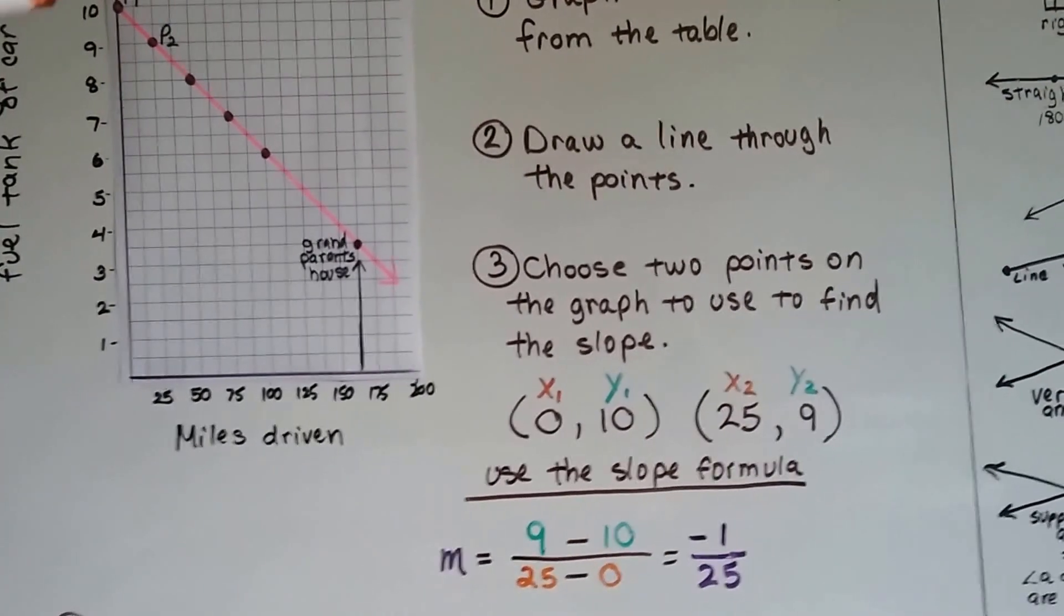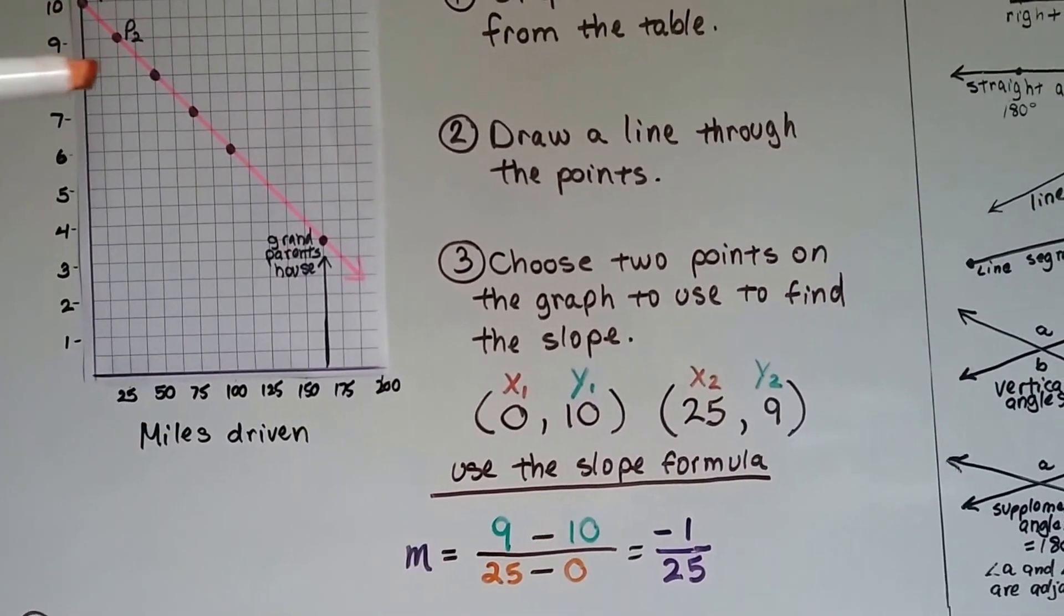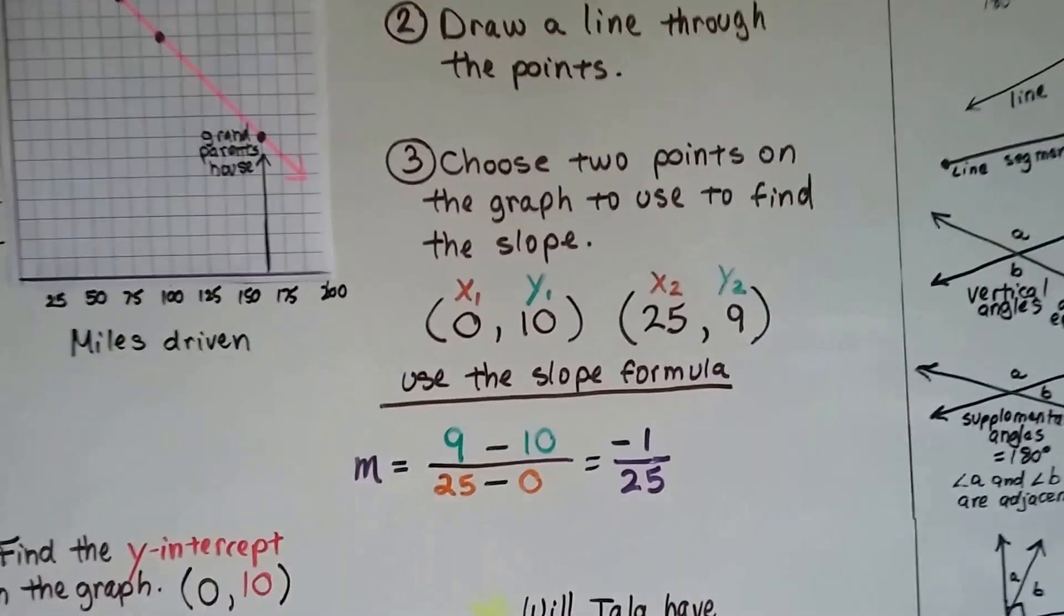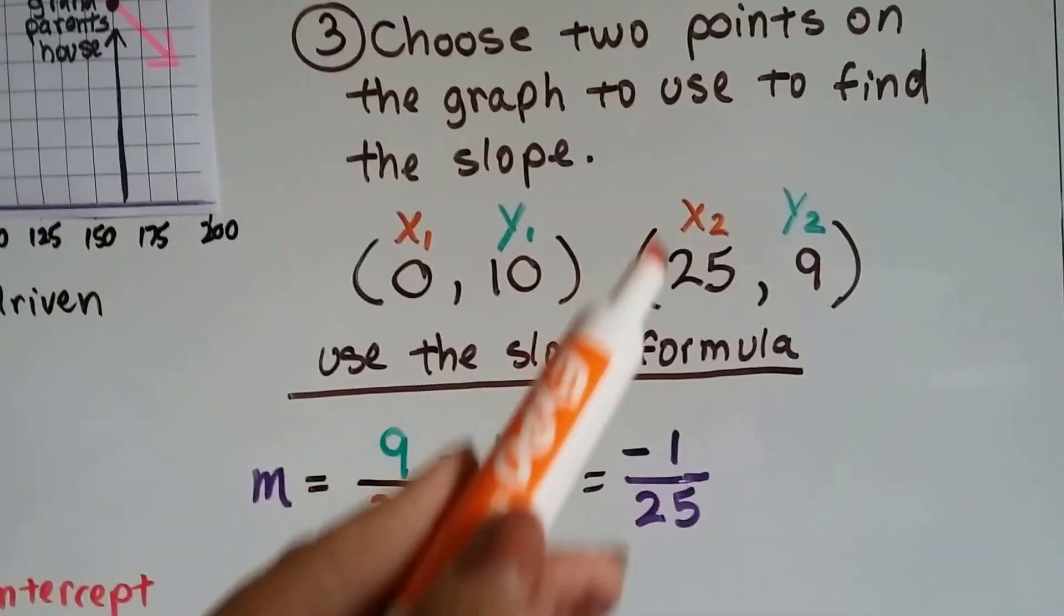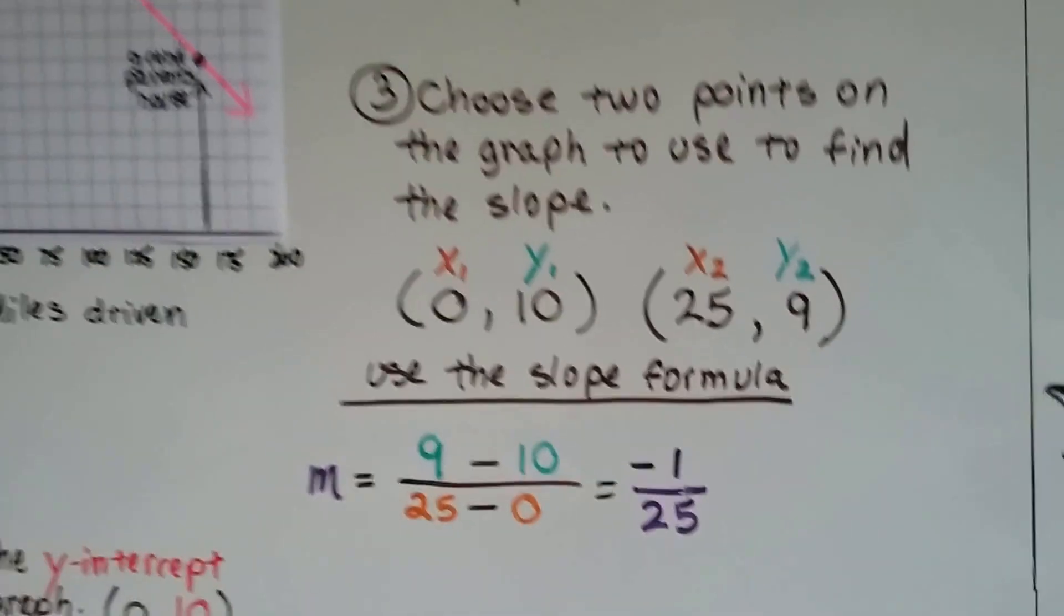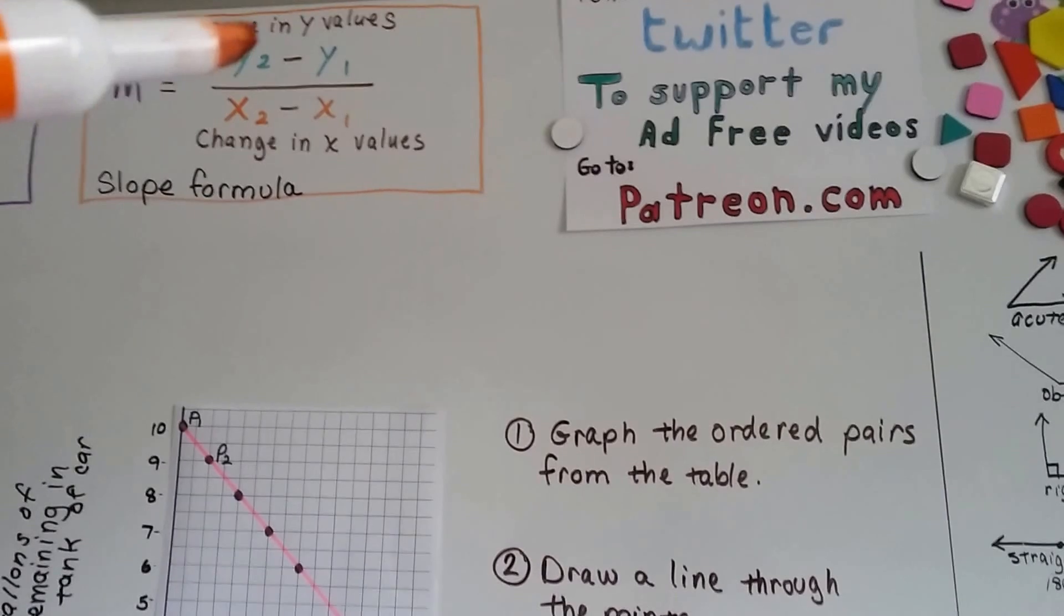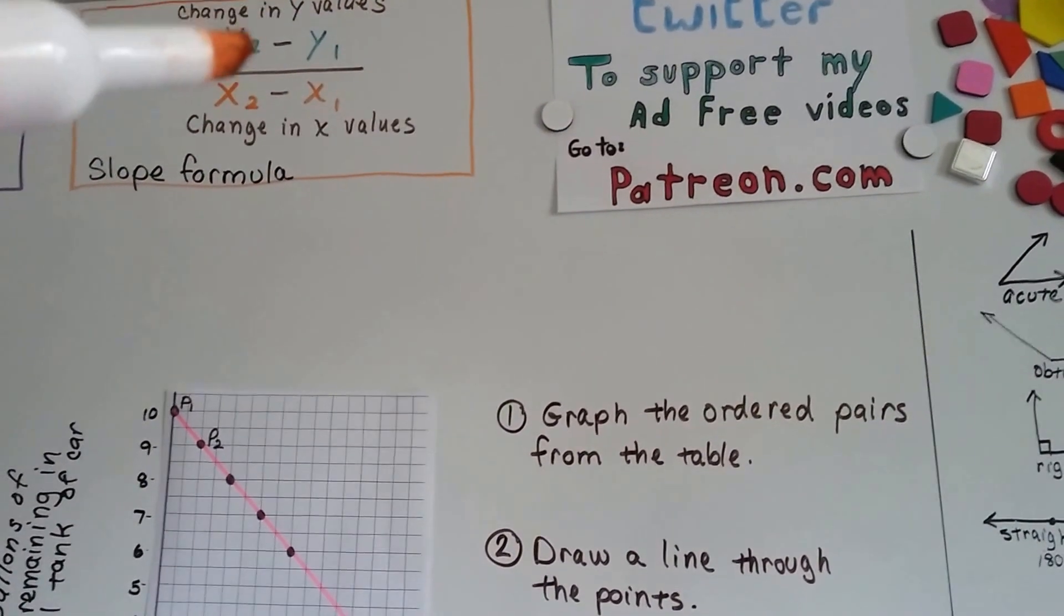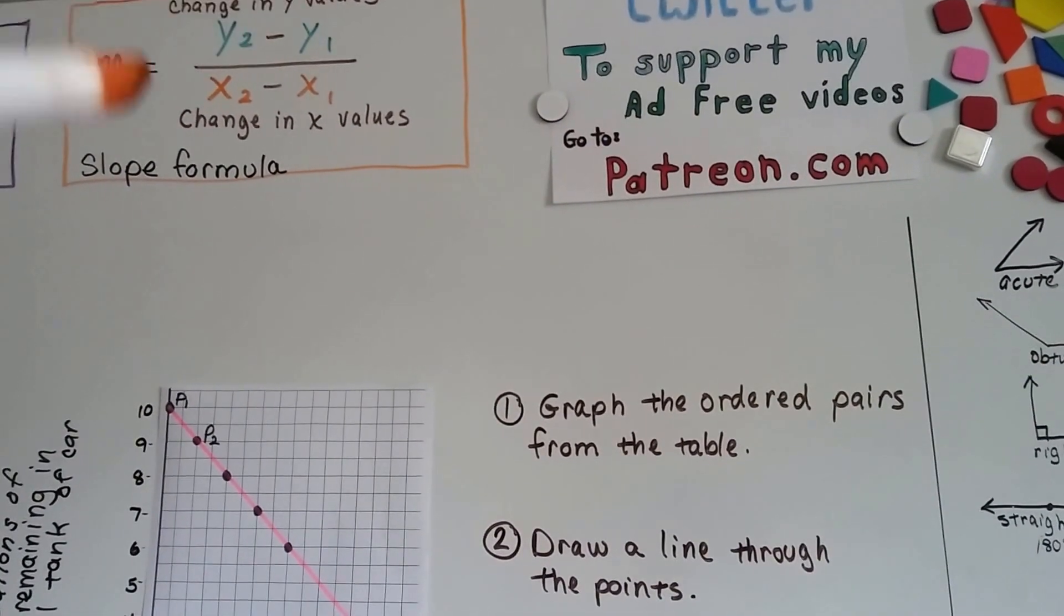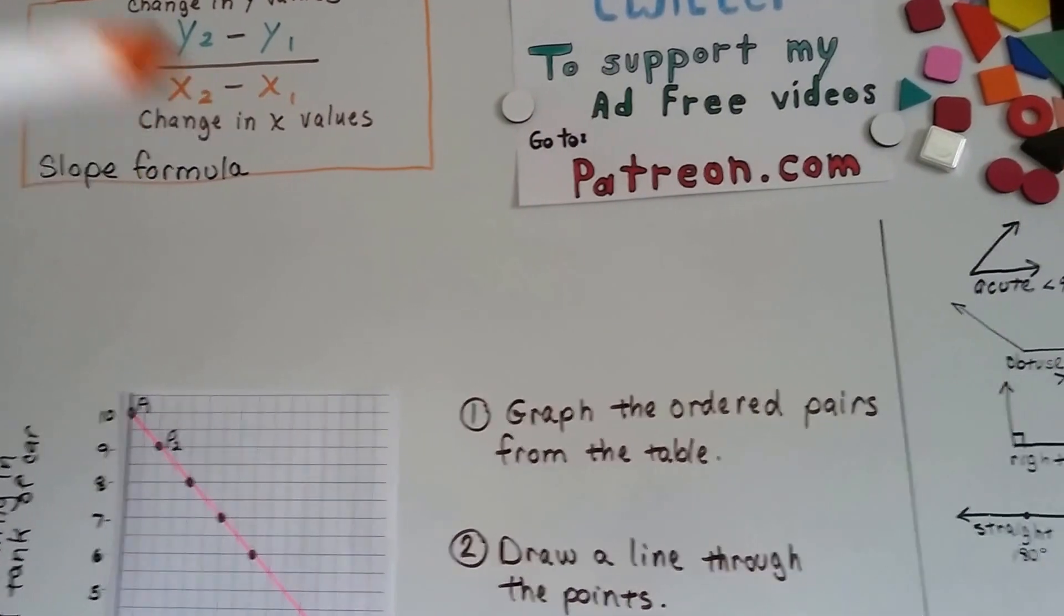Our first pairs are (0,10) and (25,9). That's x1 and y1, and x2 and y2. Now we're going to use the slope formula to find the slope. We have to subtract and do y2 take away y1 and x2 take away x1.